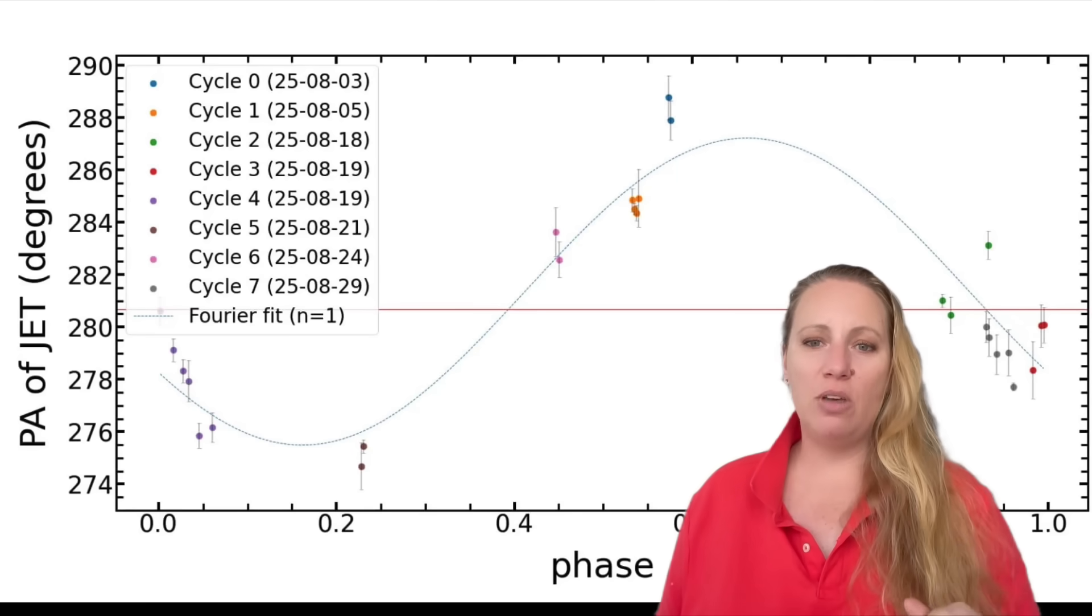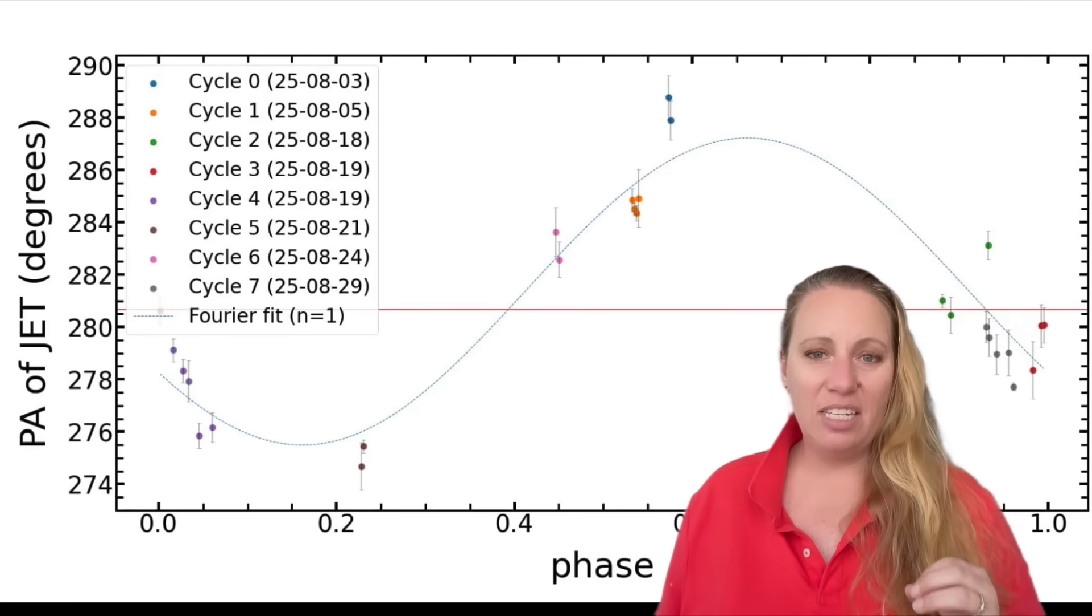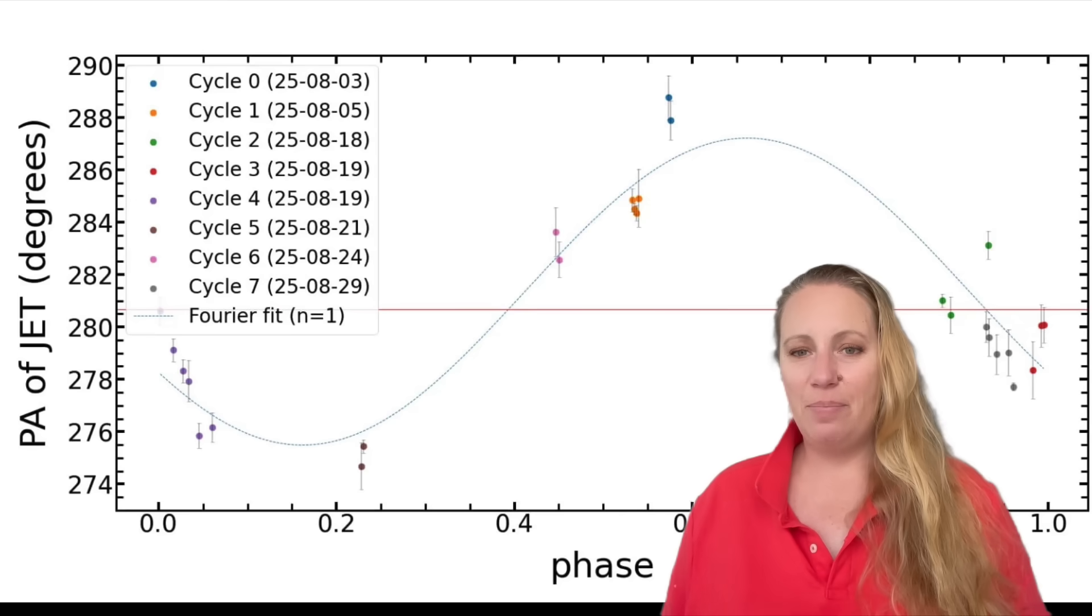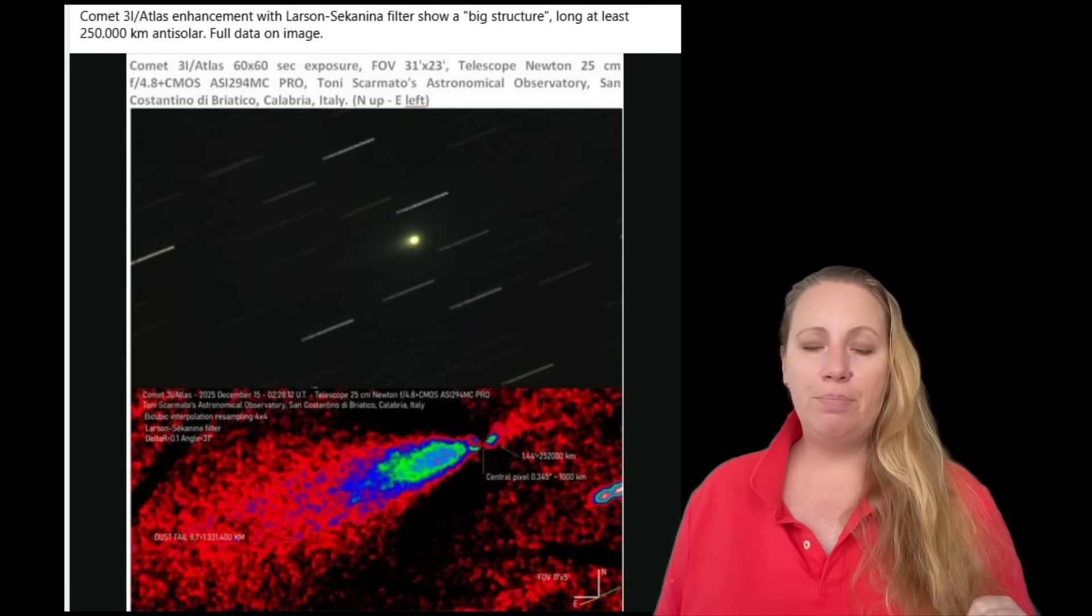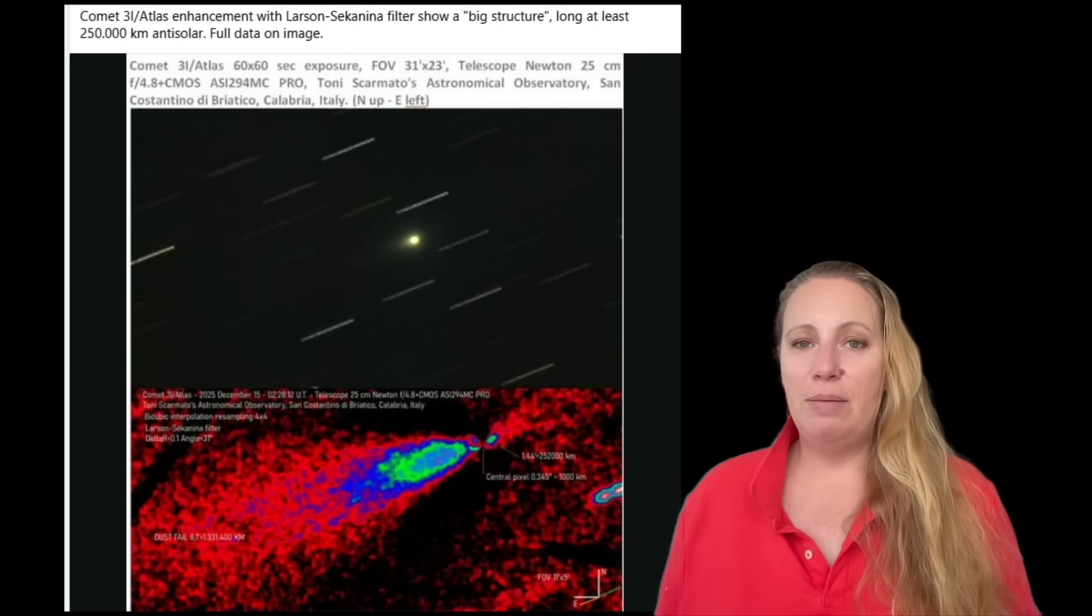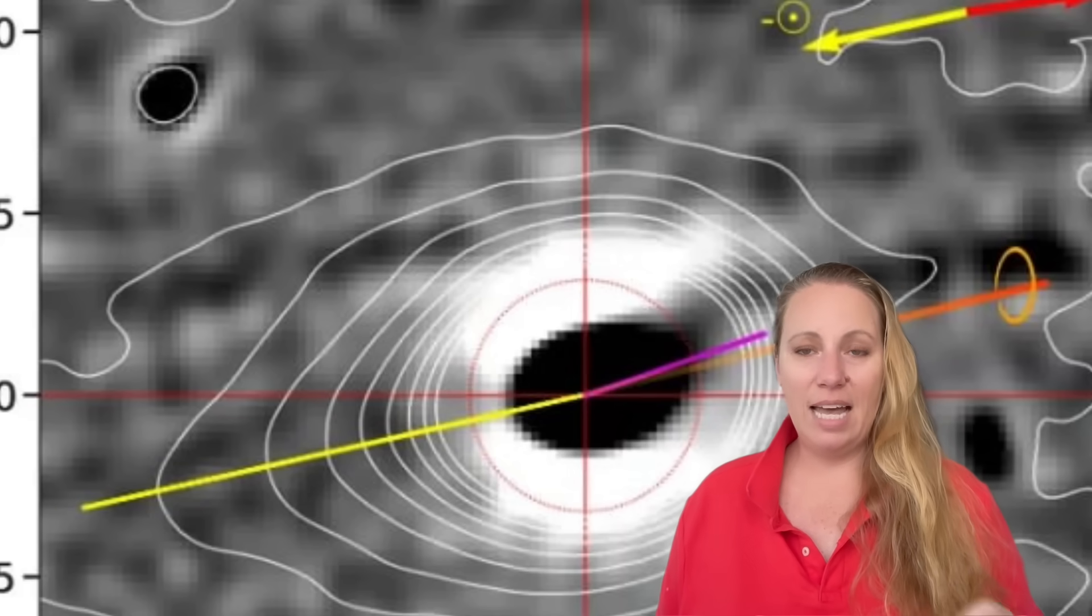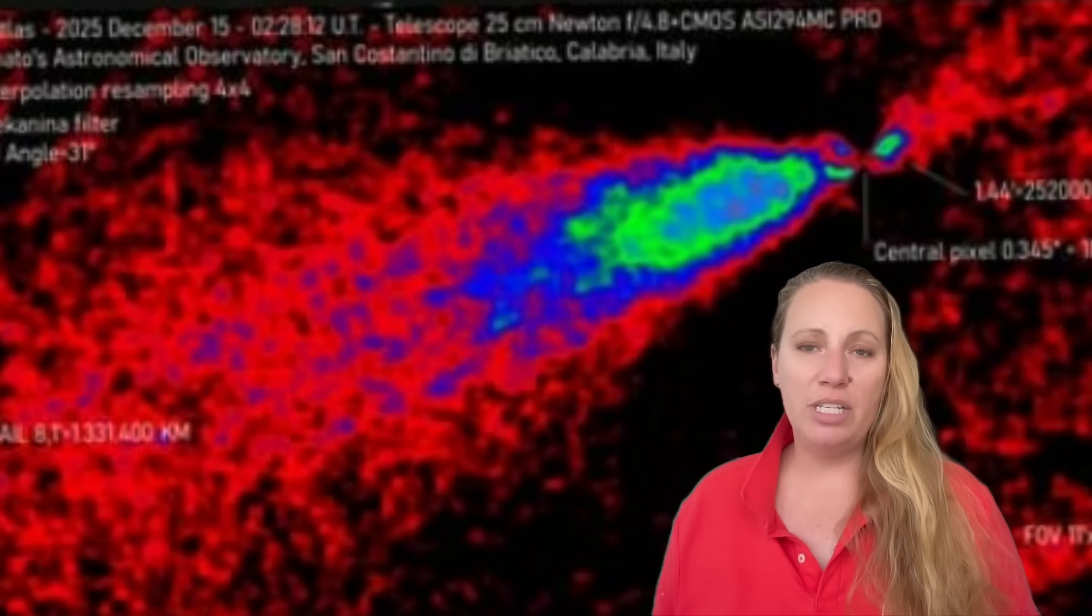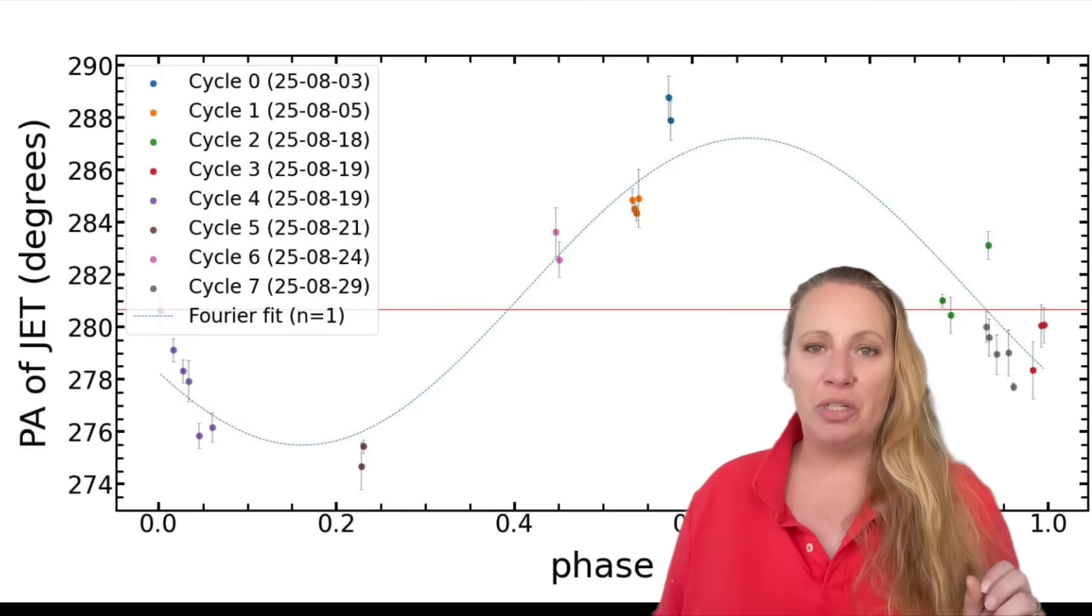This matters so much guys, because this tells us something critical. 3i Atlas has a stable rotation axis, a repeating rotational period and a structured persistent anti-tail. So that means the object is physically coherent and rotationally organized. This is not chaotic debris that's flying around there guys. And another very important point. Some people claim the tail disappeared. This image proves that this is extremely false. You cannot measure a rotating anti-tail if the anti-tail is gone. Anti-tail is real. It's still here. It rotates with the object. Its direction changes smoothly. Object spins every 7.7 hours. Spin axis is stable. Strong evidence altogether that the anti-tail is persistent and structured.